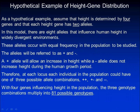Here is a hypothetical example. Assume that height is determined by four genes, and that each height gene has two alleles. In this model there are eight alleles that influence human height. In widely divergent environments these alleles occur at equal frequency in the population. The alleles will be referred to as plus and minus. A plus allele will allow an increase in height, while a minus allele does not increase height. Therefore, at each locus, each individual could have one of three possible allele combinations: plus-plus, plus-minus, or minus-minus. With four genes influencing height, the three genotype combinations multiply into 81 possible genotypes.